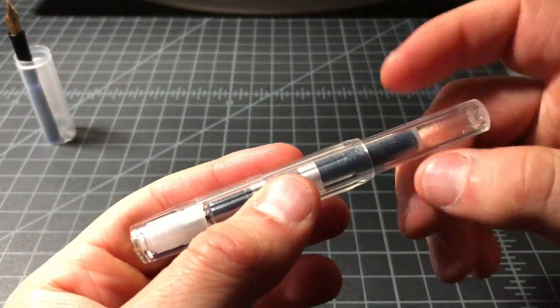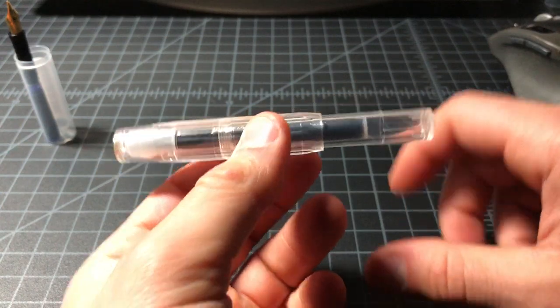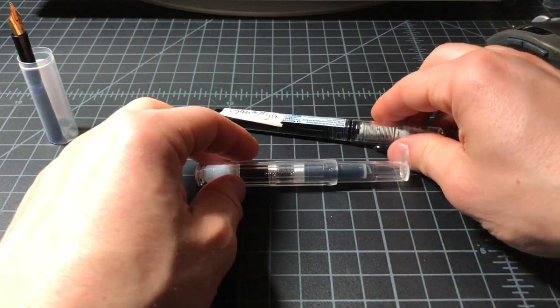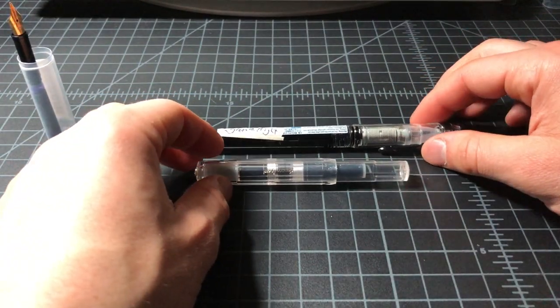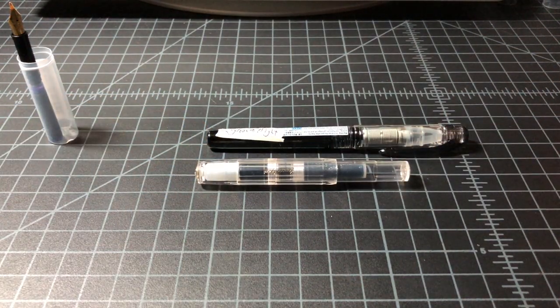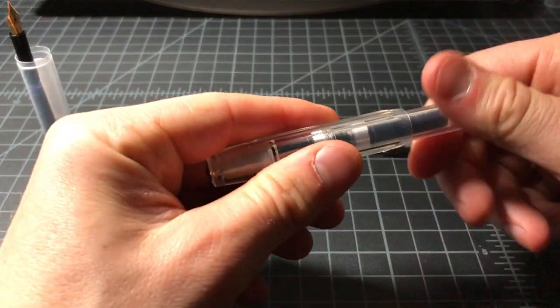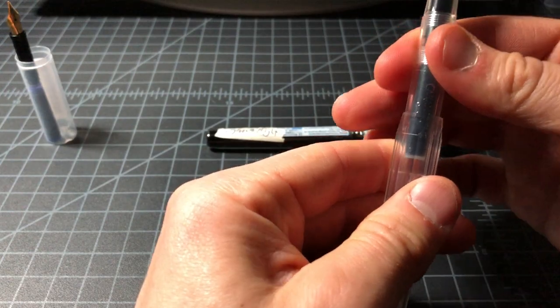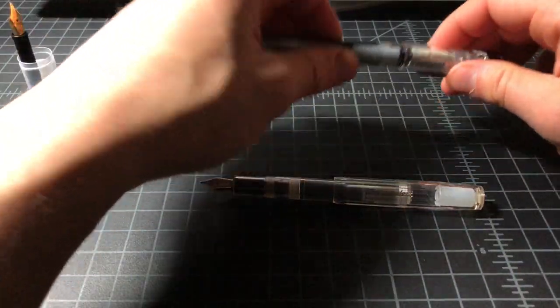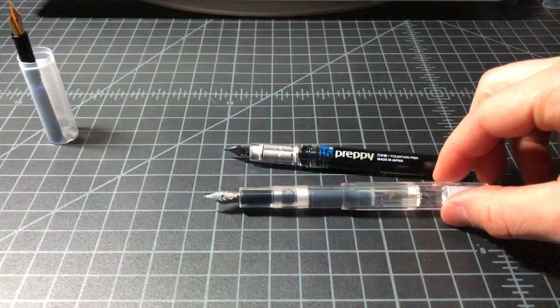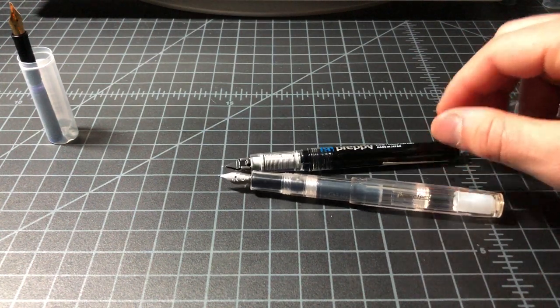The pen, capped and transportable, is quite undersized. See it next to a Platinum Preppy, which is a pretty standard pen. It's meant to be used posted and now you basically have a full size fountain pen.